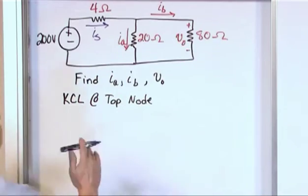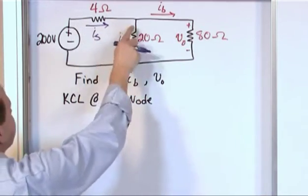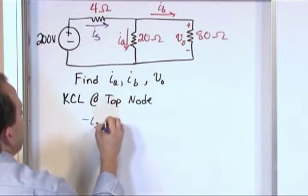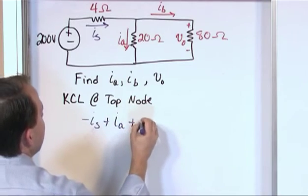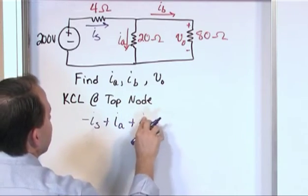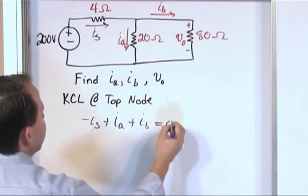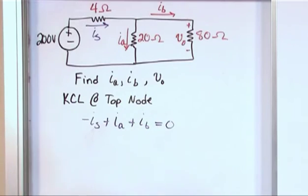let me write that right now. At this node, I have i sub s coming in, so it's negative i sub s. I have i sub a coming out, so that's positive, and I have i sub b coming out, so that's positive, and it's equal to zero. So, I stop for a second, I look at it, I say, okay, can I do anything here?